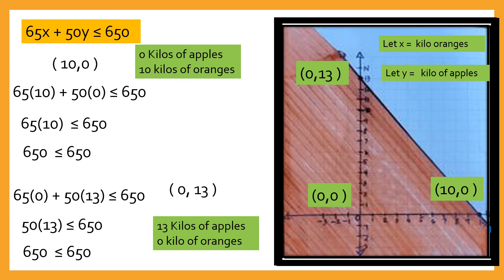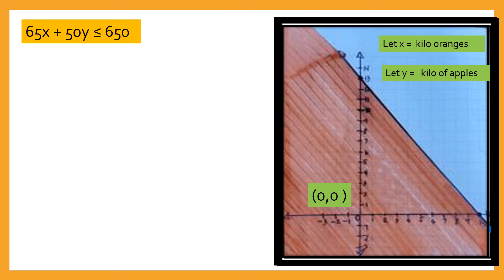Now, what are other solutions here? Ano pa ba ang ibang solutions? Kung gusto mong malaman kung ilan pa na mga combination ang gusto mo, pwede nating isolve ng ganito. Let's say, naisip mo, gusto mong bumili ng 5 kilos of oranges. Ilang kilo kaya ng apples ang gusto kong bilhin? Nalimitahan mo yung sarili mo na I just need 5 kilos of oranges. Ilang kilos kaya ang kaya kong bilhin na apples dito?